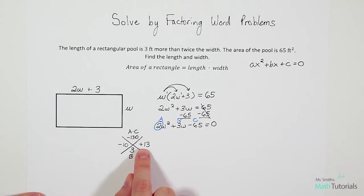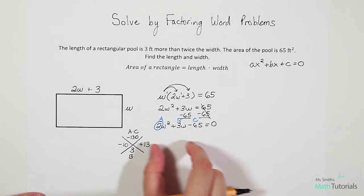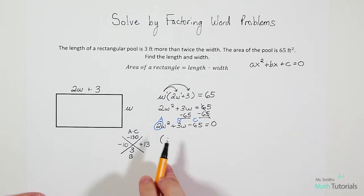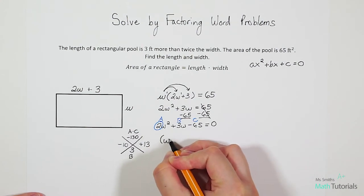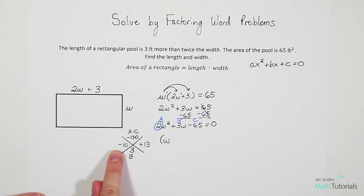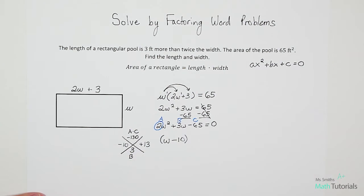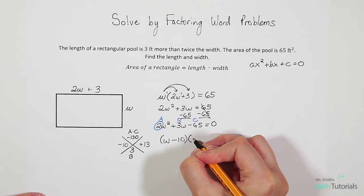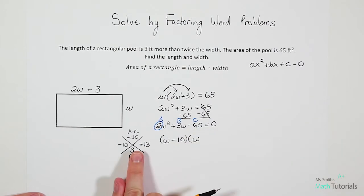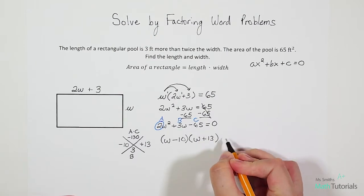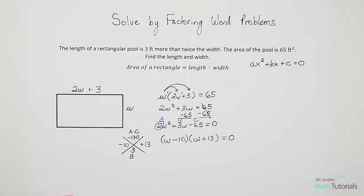Now that we know our two values, we're ready to build our parentheses sets. So what we do is in our first parentheses, we take our letter, which in this case is W. And we're going to use this first number we found, negative 10. So W minus 10. Now in our second parentheses set, we're going to take our W again. And this time we're going to do plus 13 equals zero. We don't want to leave that behind.